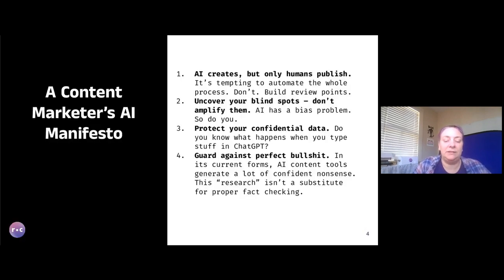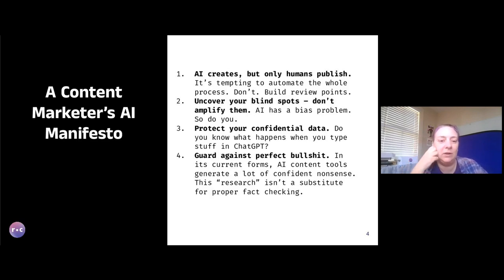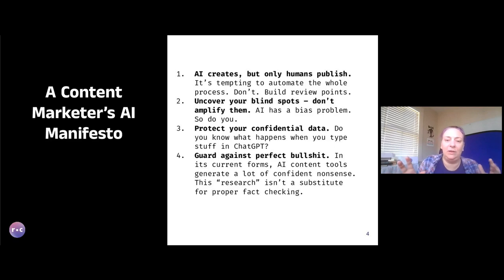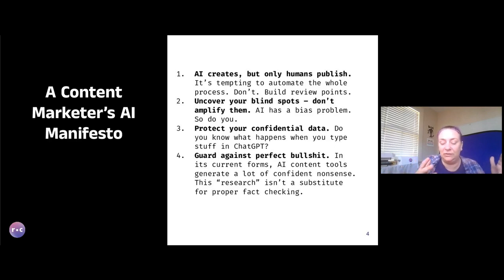So that's our agenda. I've been working on what I call my content marketer's AI manifesto, and one of my rules — which shapes how I do this work — is: when AI creates, only humans publish. I know there's a dream for some of us that you just automate the whole process. Don't. You need that human review point. You actually don't want things to just be made and go. You always want to build in healthy, appropriate checkpoints.